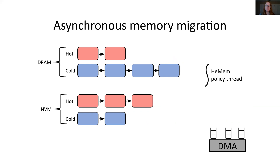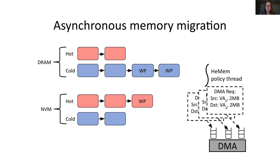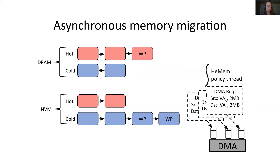Once pages have been classified as hot or cold, a separate policy thread can migrate pages among memory tiers. Memory migration is also done asynchronously in batches. When it decides to migrate a batch of pages, the policy thread will first mark those pages as write protected. This allows reads to pages undergoing migration, but writes to these pages must wait until the migration has completed for correctness. Next, the policy thread sets up requests to the DMA engine to have the DMA perform migration. The DMA will copy memory in the background among memory tiers. Once the migration has completed, the write protection is removed from these pages and the application can resume as normal.